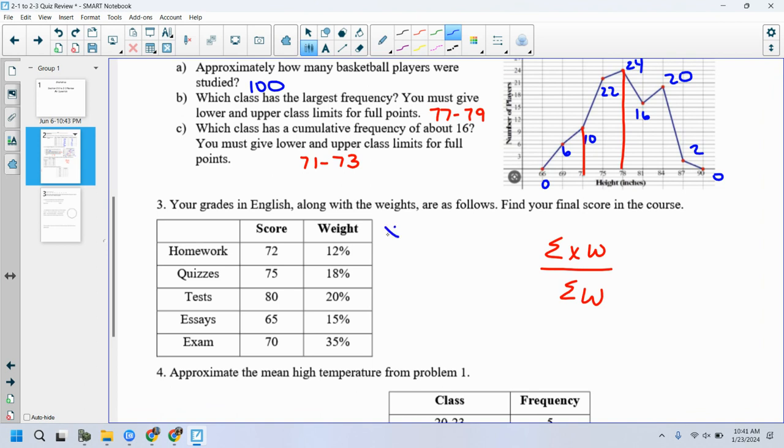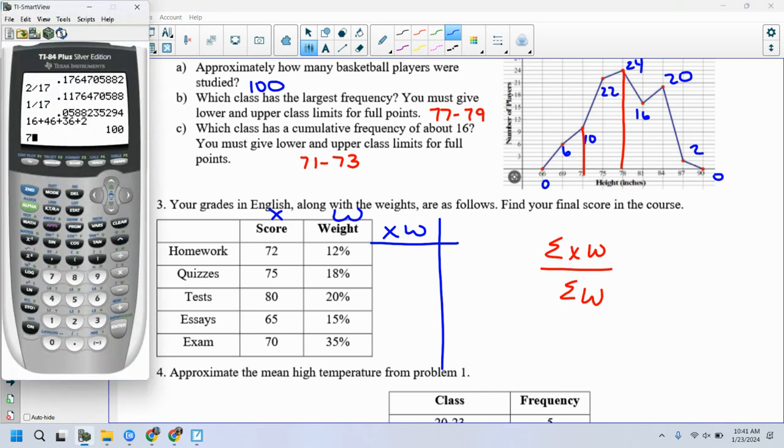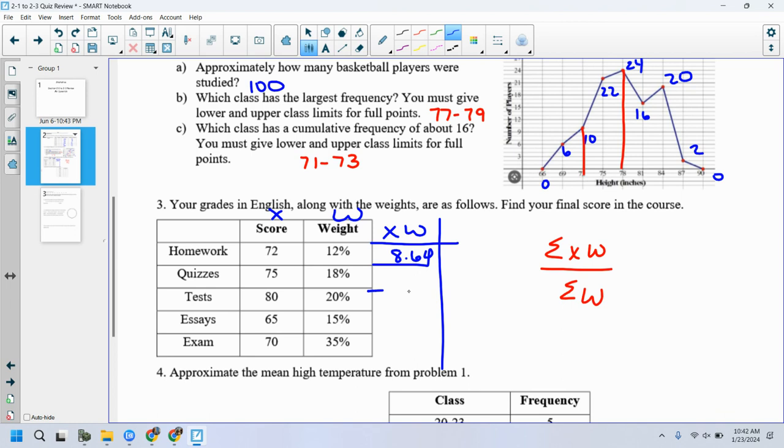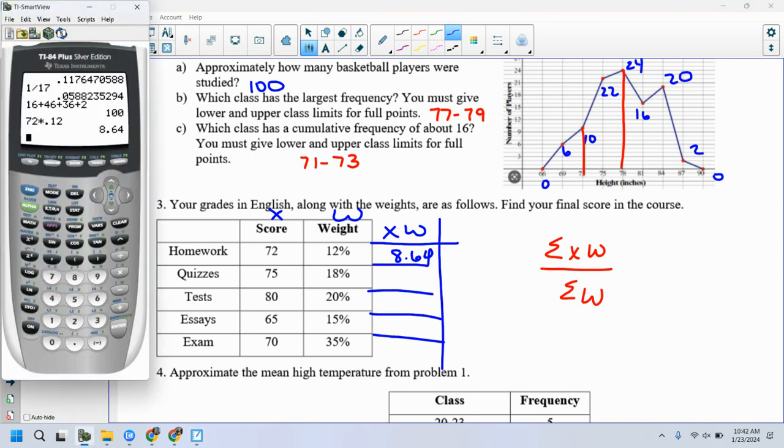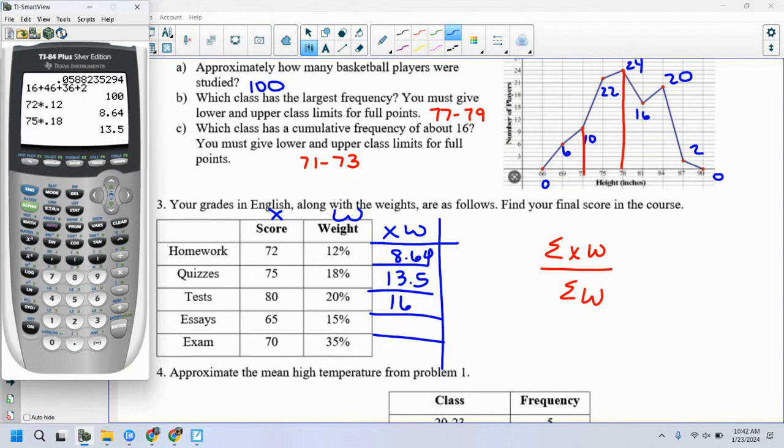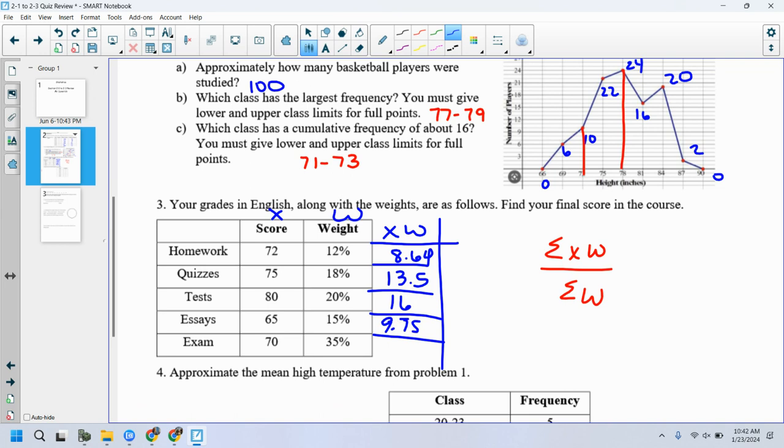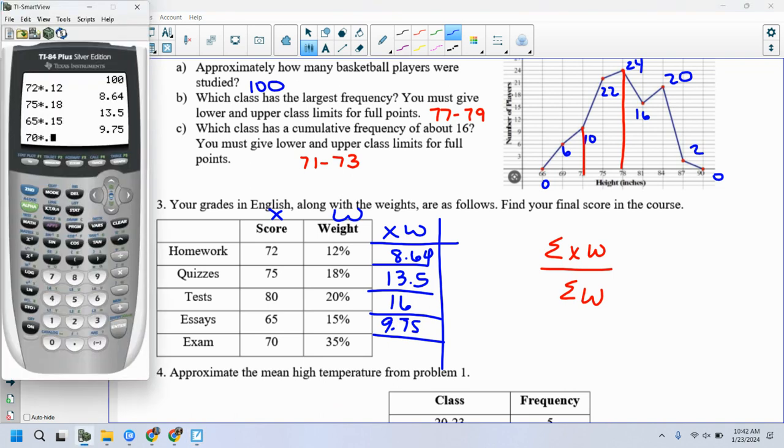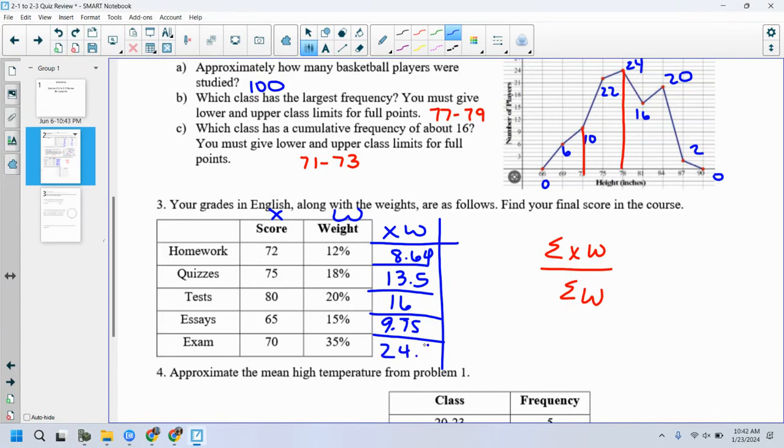Okay. I'm going to give myself a little bit more room here. Let's find X times W because this is X and this is W. I'm going to use W as a decimal, the weights as a decimal. So I'm going to have 72 times 0.12, 8.64. I'm going to take 75 times 0.18, 13.5. I'm going to take 80 times 0.2, which is 16. I'm going to take 65 times 0.15, which is 9.75. And then we have 70 times 0.35, which gets me 24 and a half.